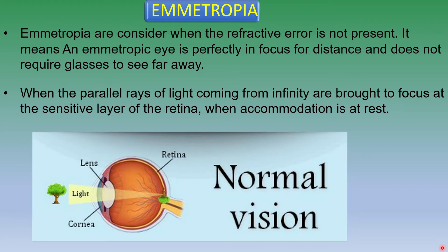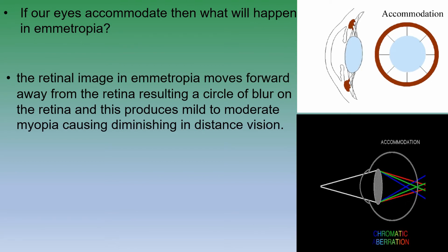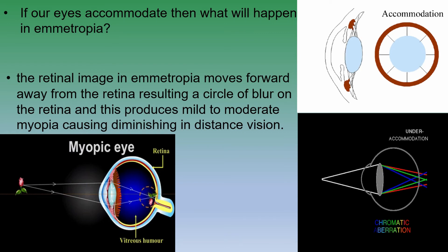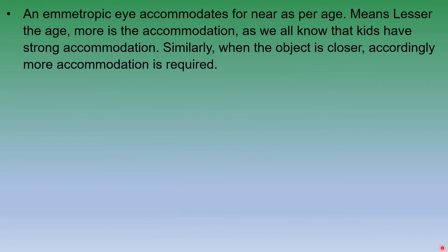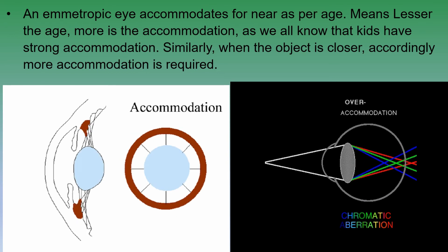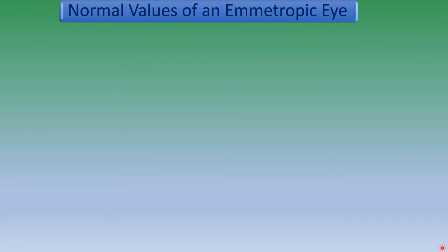Let's see why we are always considering that accommodation should be at rest, whether it is in emmetropia or ametropia. If our eyes accommodate, then what will happen in emmetropia? The retinal image in emmetropia moves forward away from the retina, resulting in a circle of blur on the retina, and this produces mild to moderate myopia causing diminishing in distance vision. An emmetropic eye accommodates for near as per age — lesser the age, more is the accommodation. As we all know, kids have strong accommodation. Similarly, when the object is closer, accordingly more accommodation is required.